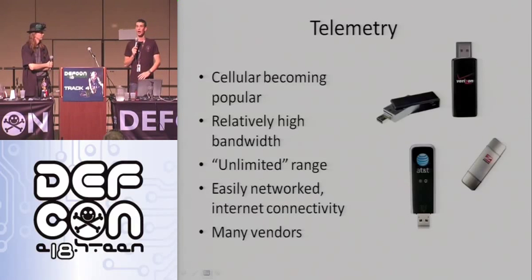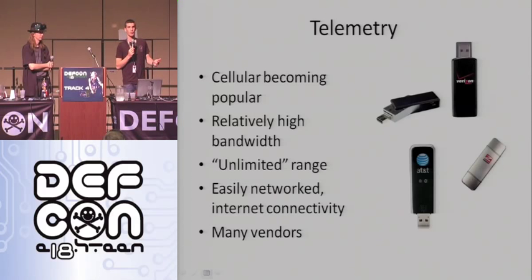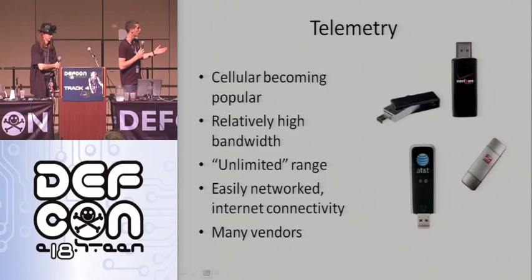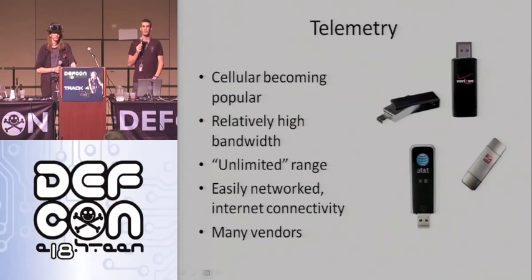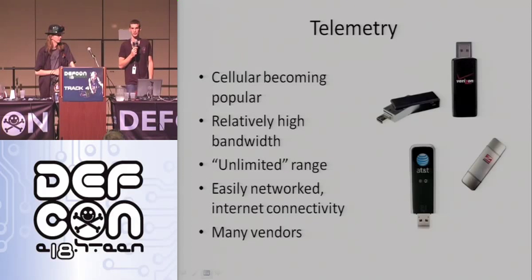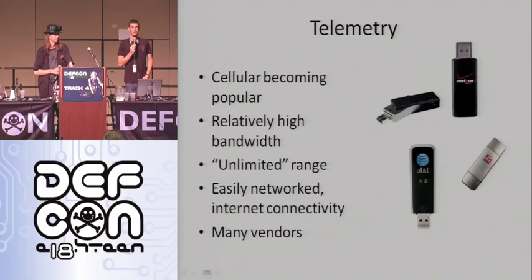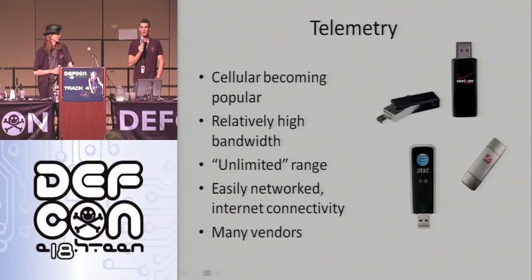Cellular is becoming popular in the DIY drones community because it's a higher-bandwidth, easier way to network your UAV. Put the Beagle Board on the plane, plug in an inexpensive USB cellular device - pick your vendor: Verizon, T-Mobile, AT&T - and now the Beagle Board is on the internet. If the plane is flying and networked, we have unlimited range as long as we're within the cell network, and I can play with it from across the planet.